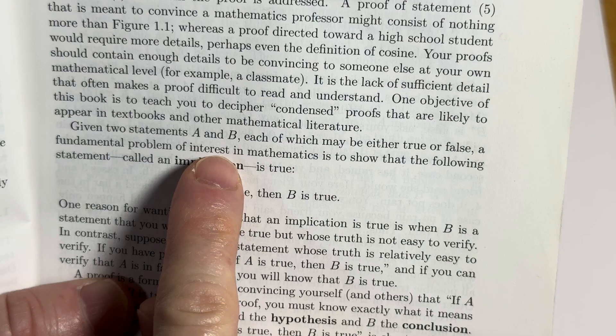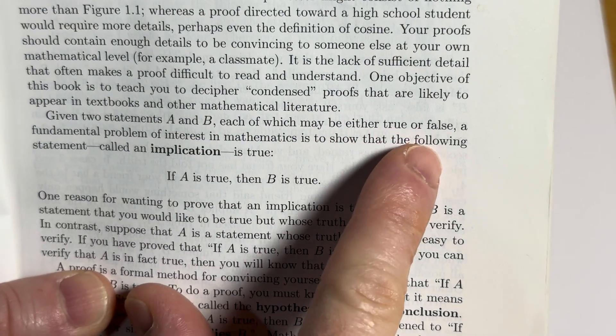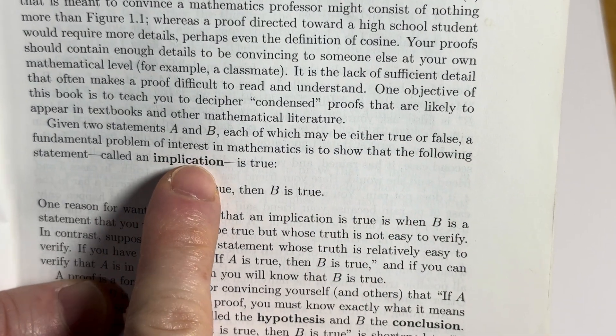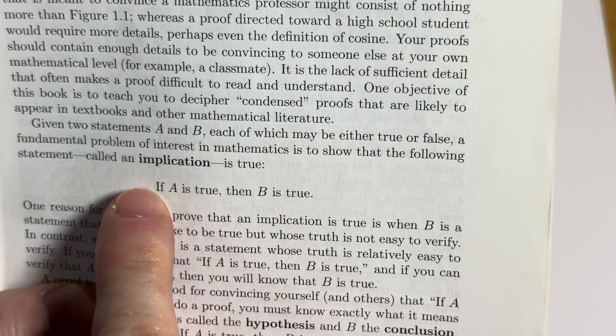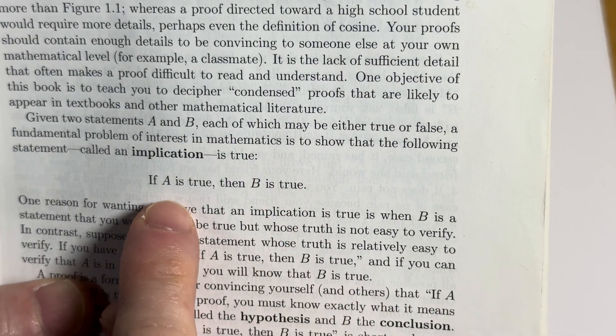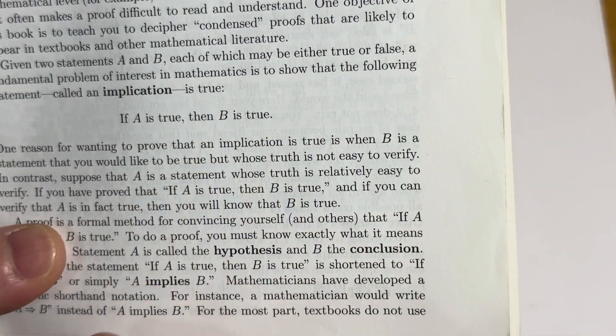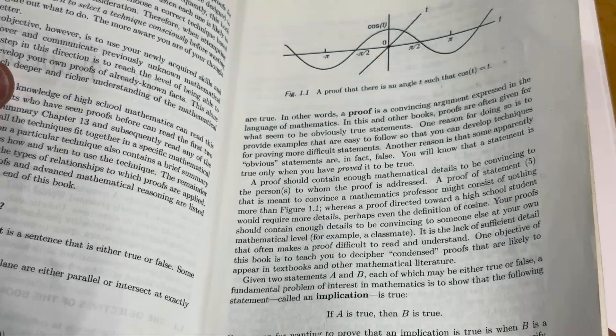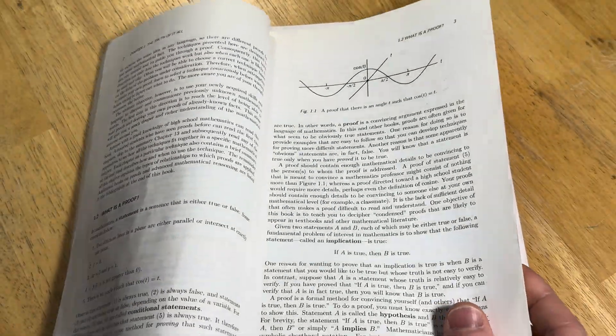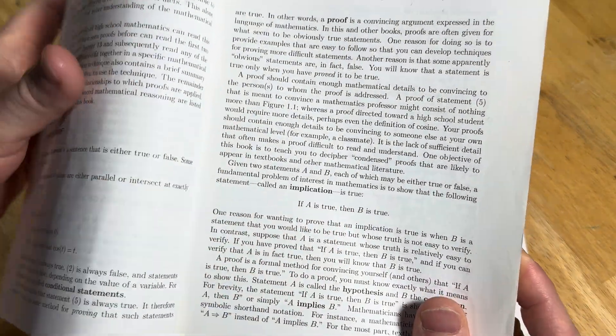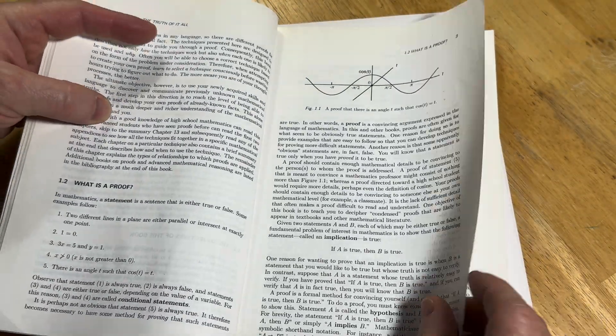Given two statements, A and B, each of which may either be true or false, a fundamental problem of interest in mathematics is to show the following statement called an implication is true. If A is true, then B is true. And that's a very typical thing that you prove in mathematics. And to prove that you basically assume A is true. And then you follow a series of steps and you show B is true.